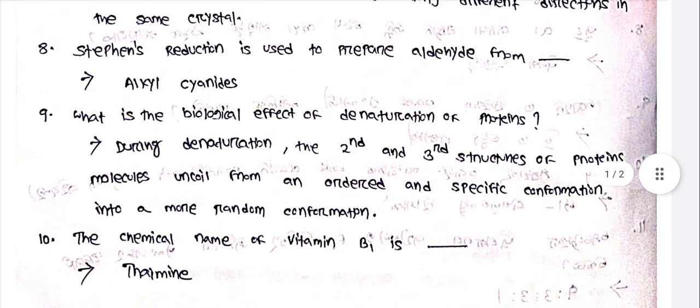What is the biological effect of denaturation of proteins? During denaturation, the secondary and tertiary structure of protein molecules uncoils from an ordered and specific confirmation into a more random confirmation.